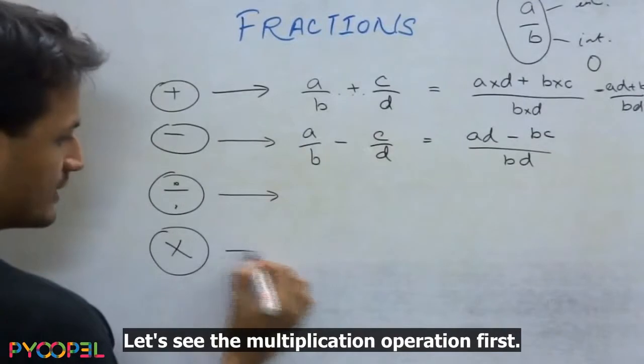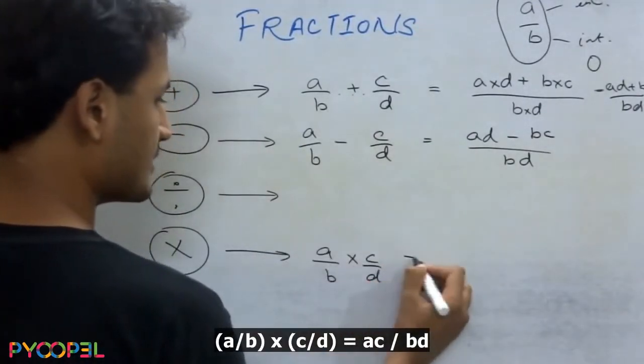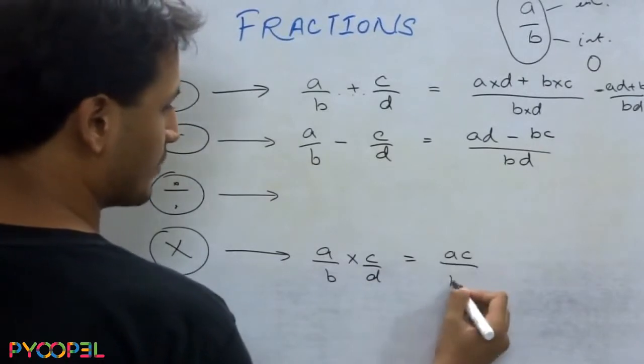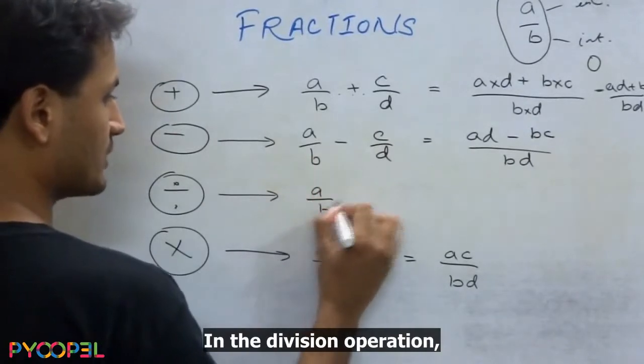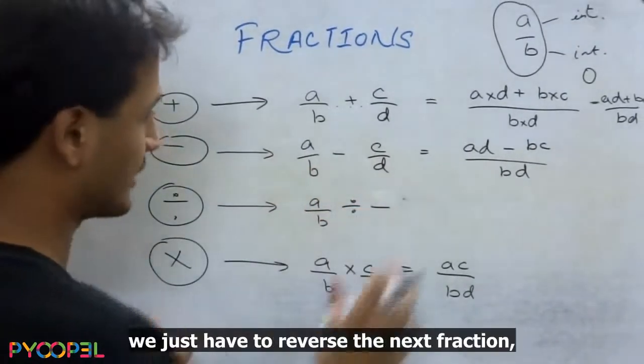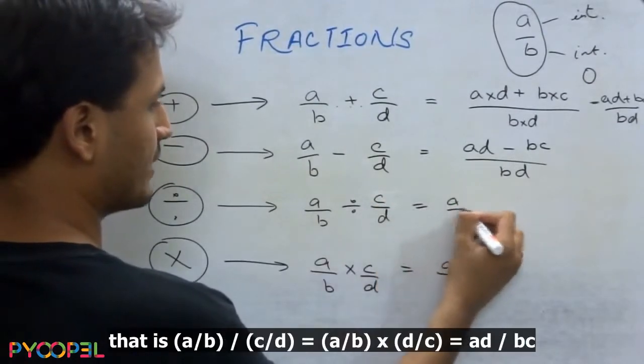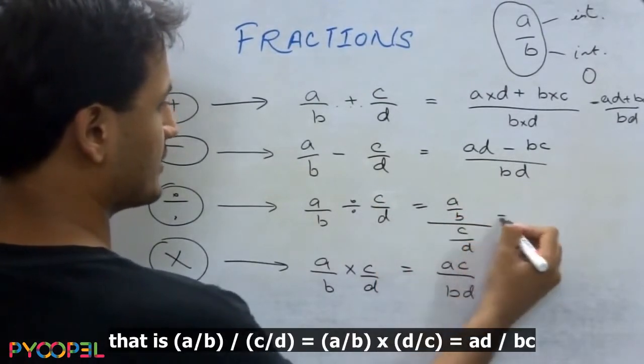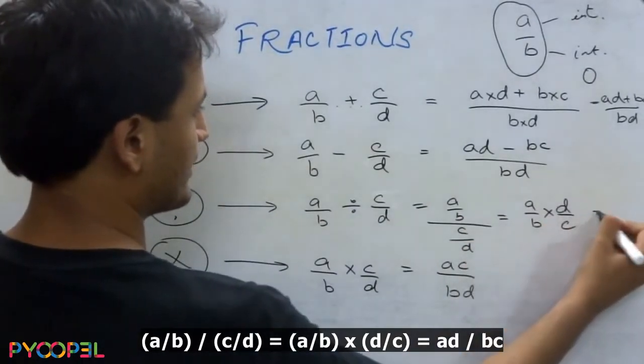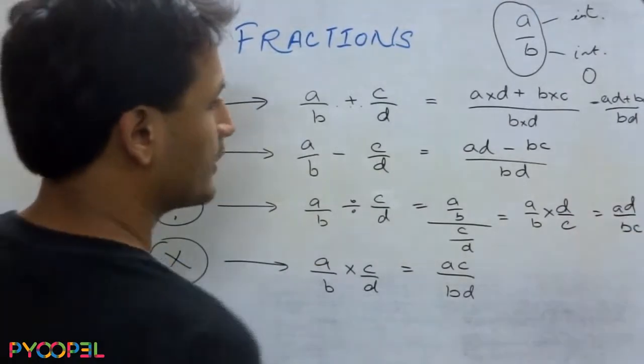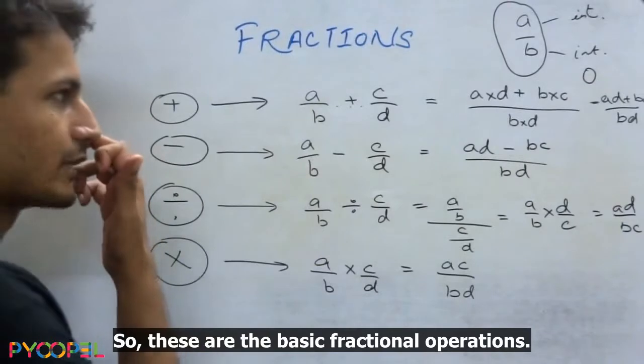The division operation, let's see the multiplication first. a by b into c by d is simply ac upon bd. And in the division operation we just have to reverse the next fraction. That is a by b divided by c by d is equal to a by b into d by c, which is ad upon bc. So these are the basic fractional operations.